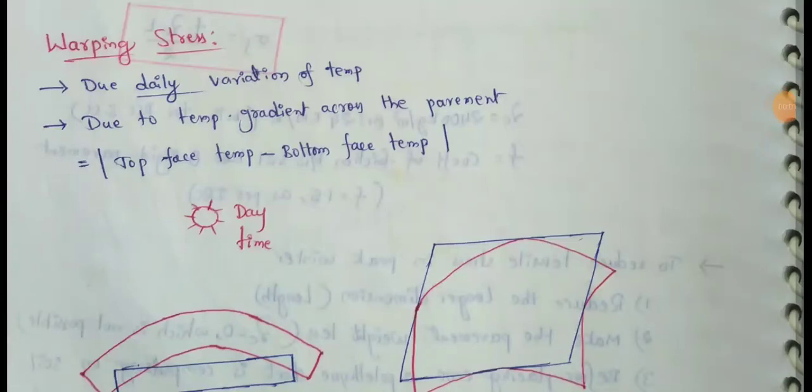Next topic: Warping Stresses. I already discussed the previous video. So in this video, there are two types of stresses. The first one is Warping Stresses and the second one is Frictional Stresses.